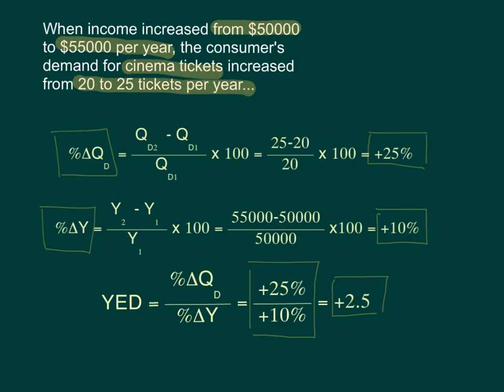This income elasticity of demand value of positive 2.5 means that for every 1% increase in income, demand will increase by 2.5%. Equally, if income drops by 1%, demand will decrease by 2.5%. That's what this value actually means.